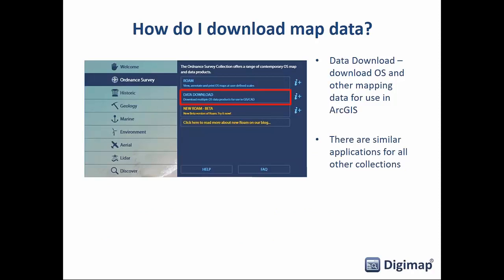I'll concentrate mostly on Ordnance Survey data because that's what most people have and it's got the widest range of datasets — raster data, vector data, point data, and various other things. The same things apply to the other collections in terms of getting data into GIS. To download map data, you go into the data download application within Digimap, which allows you to get the data in whatever format we supply it in. There are similar data download applications for all the different collections — historic, geology, and so on.